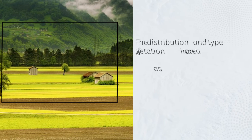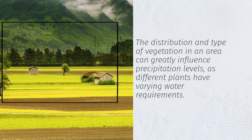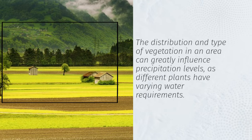The distribution and type of vegetation in an area can greatly influence precipitation levels, as different plants have varying water requirements.